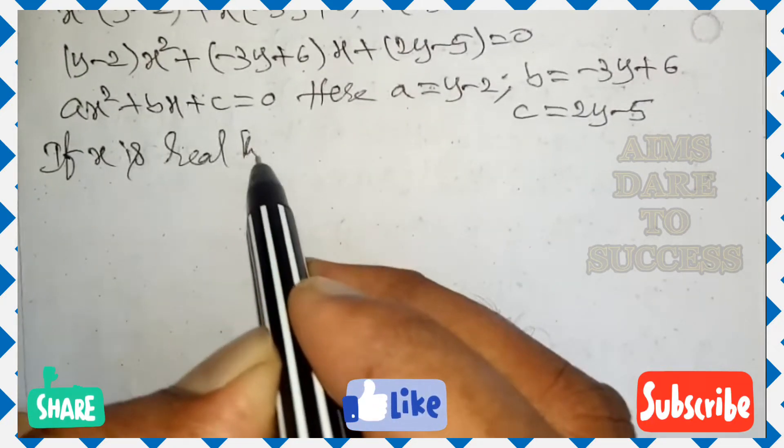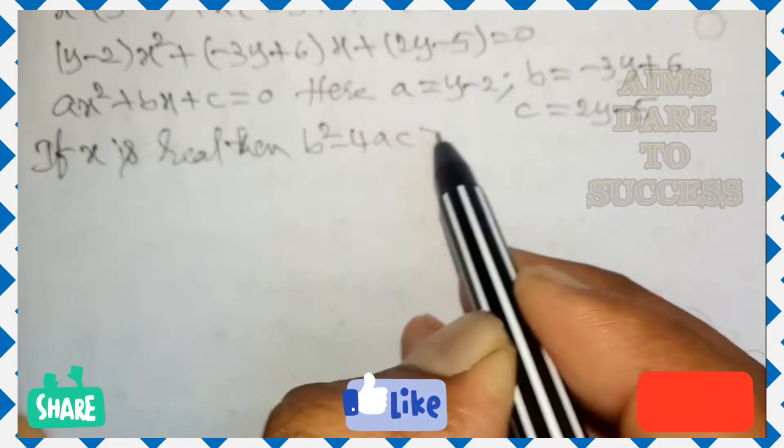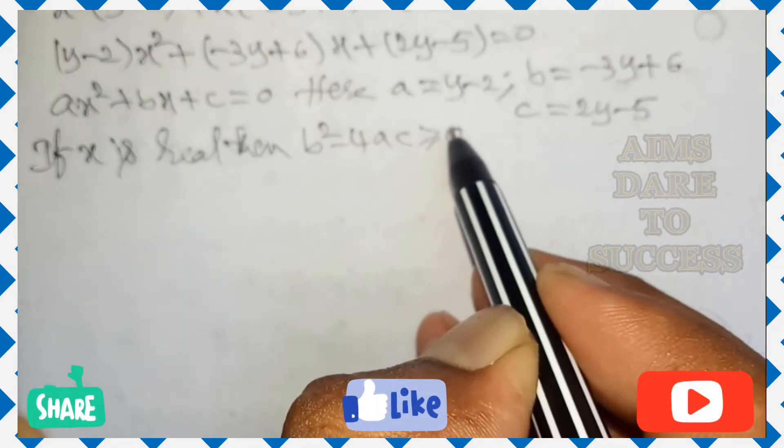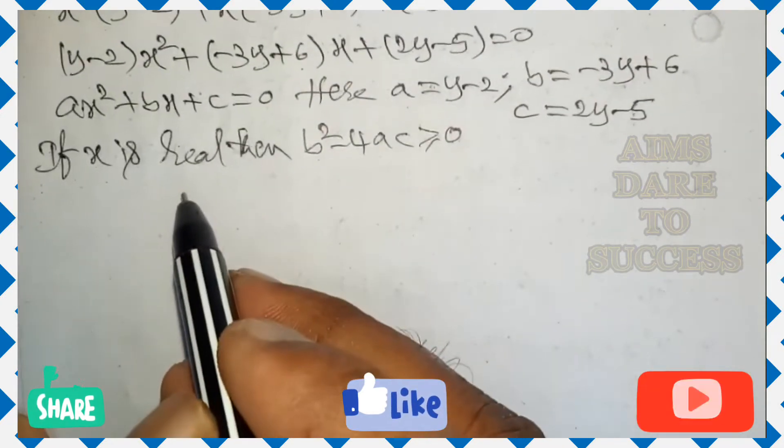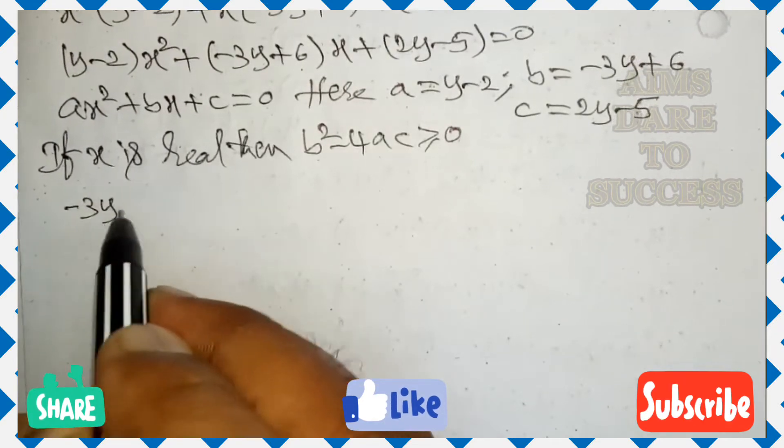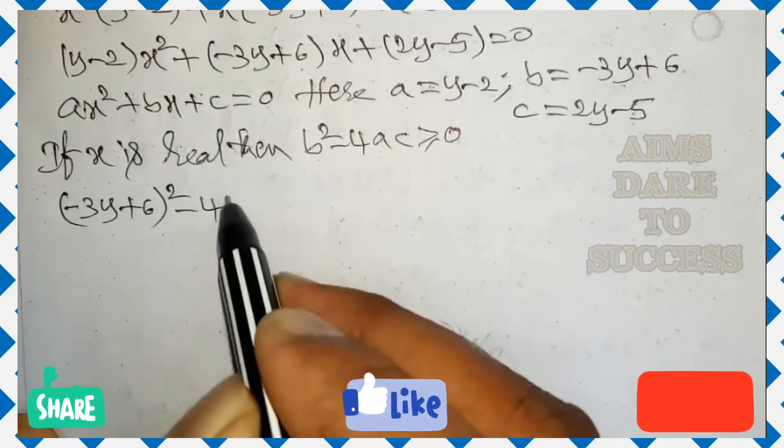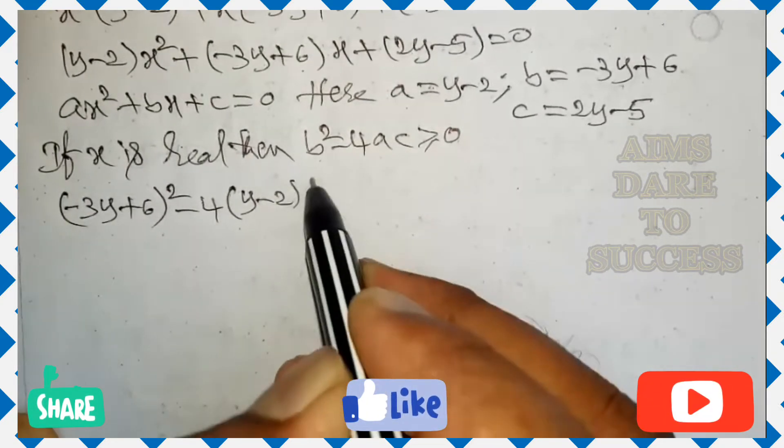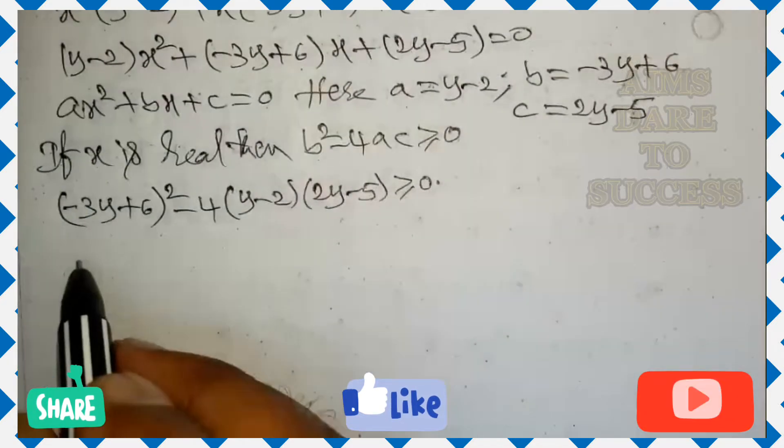then discriminant value delta, b square minus 4ac greater than or equals to 0. a, b, c values substituting in this formula. We get b value minus 3y plus 6 whole square minus 4 into a value y minus 2 into c value 2y minus 5 is greater than or equal to 0.